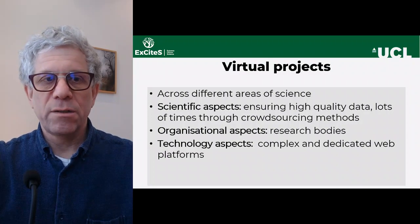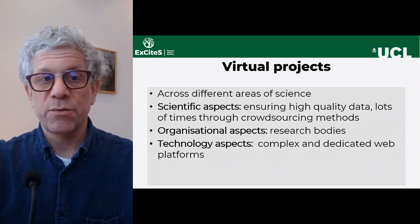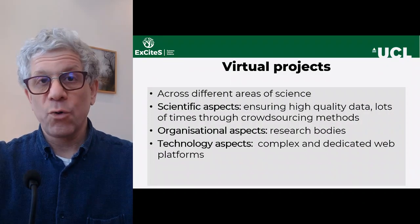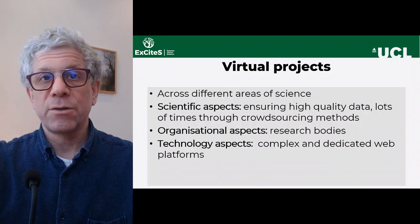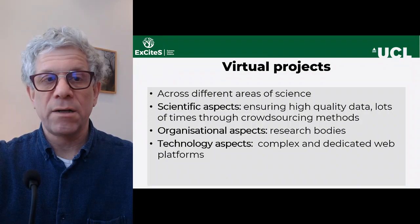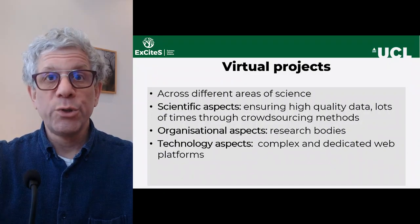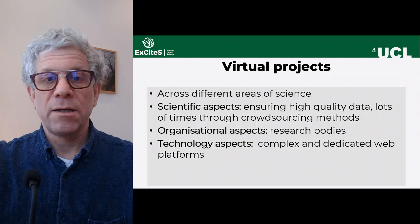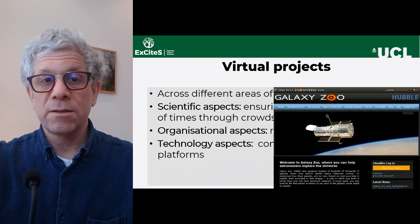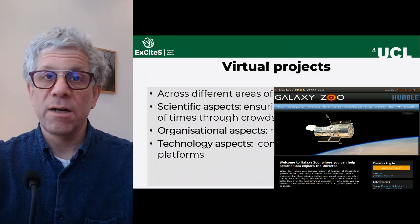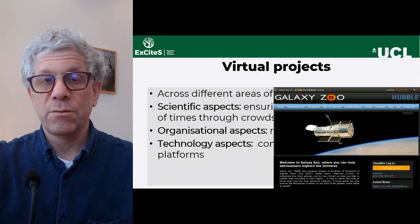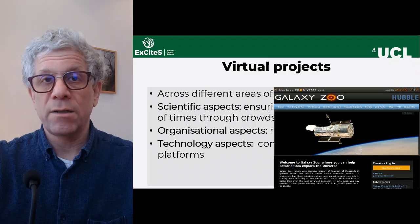Virtual projects can happen across different areas of science. They usually have a strong scientific aspect aimed at ensuring high quality data, and often use crowdsourcing methods. They are usually run by research bodies and can have complex technological apparatus. Galaxy Zoo, where volunteers classify images of galaxies to help astronomers understand aspects of galaxy creation, is a good example.